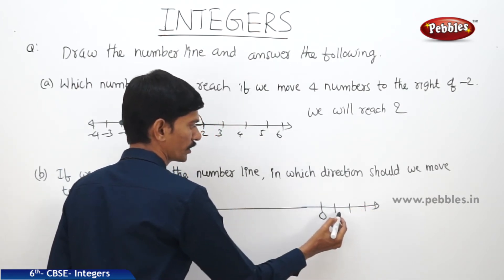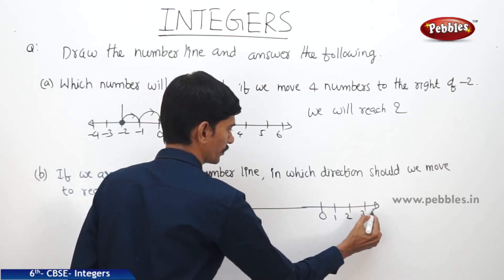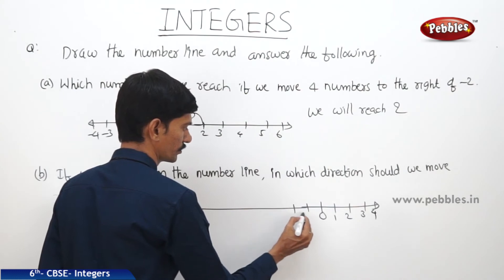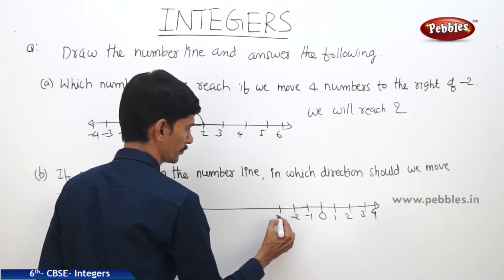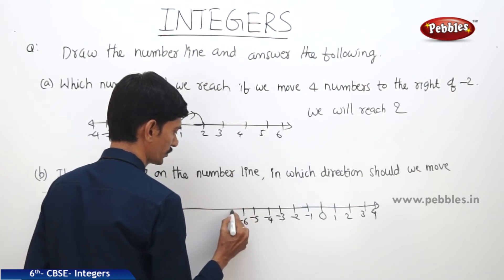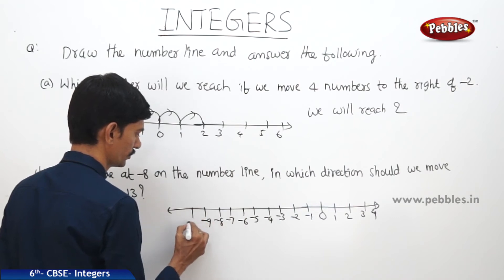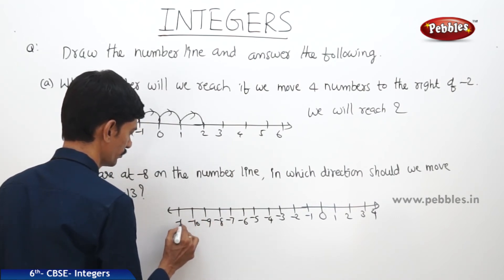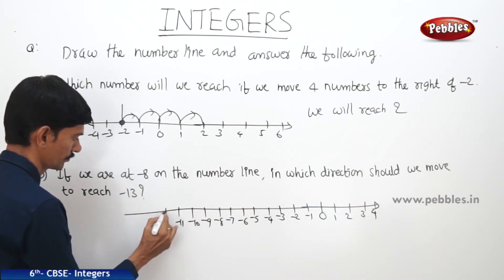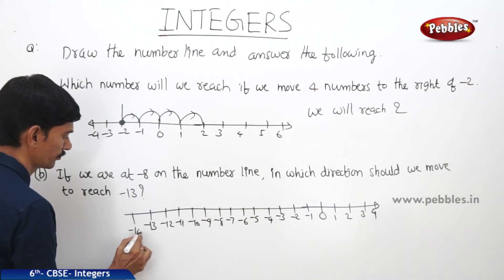The numbers to the right of 0 are the positive integers: 1, 2, 3, 4, and so on. To the left we take negative integers: minus 1, minus 2, minus 3, minus 4, minus 5, minus 6, minus 7, minus 8, minus 9, minus 10, minus 11, minus 12, minus 13, and minus 14.